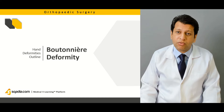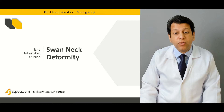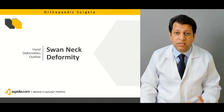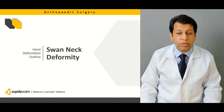Swan neck deformity is a hyperextension of the PIP with flexion of the DIP joint. This may be due to either hyperactive extensors, a lacerated FDP or FDS, or injury to the volar plate, which may be connected to rheumatoid arthritis or trauma, and all of these can lead to swan neck deformity.